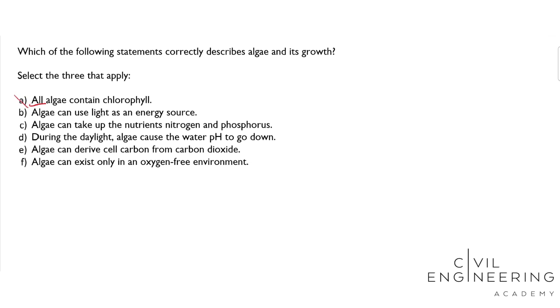B: Algae can use light as an energy source. This is true because algae are like little plants, so they use light, and they also uptake nutrients like nitrogen and phosphorus to produce more algae and grow.